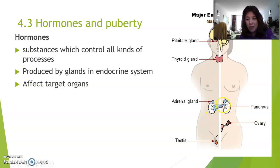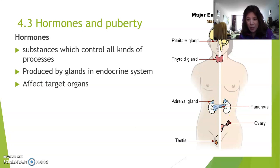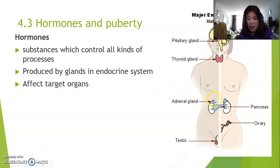Another example is the pancreas, which produces insulin. Insulin controls the level of blood sugar in your bloodstream, which is important for your body to stay healthy and get enough energy. If you cannot control the sugar amount in your bloodstream, that means not enough sugar gets into the cells because your insulin hormone does not work well — and that means you need to inject insulin from another source. You can see that hormonal glands affect target organs; the hormones are messengers that affect target organs.